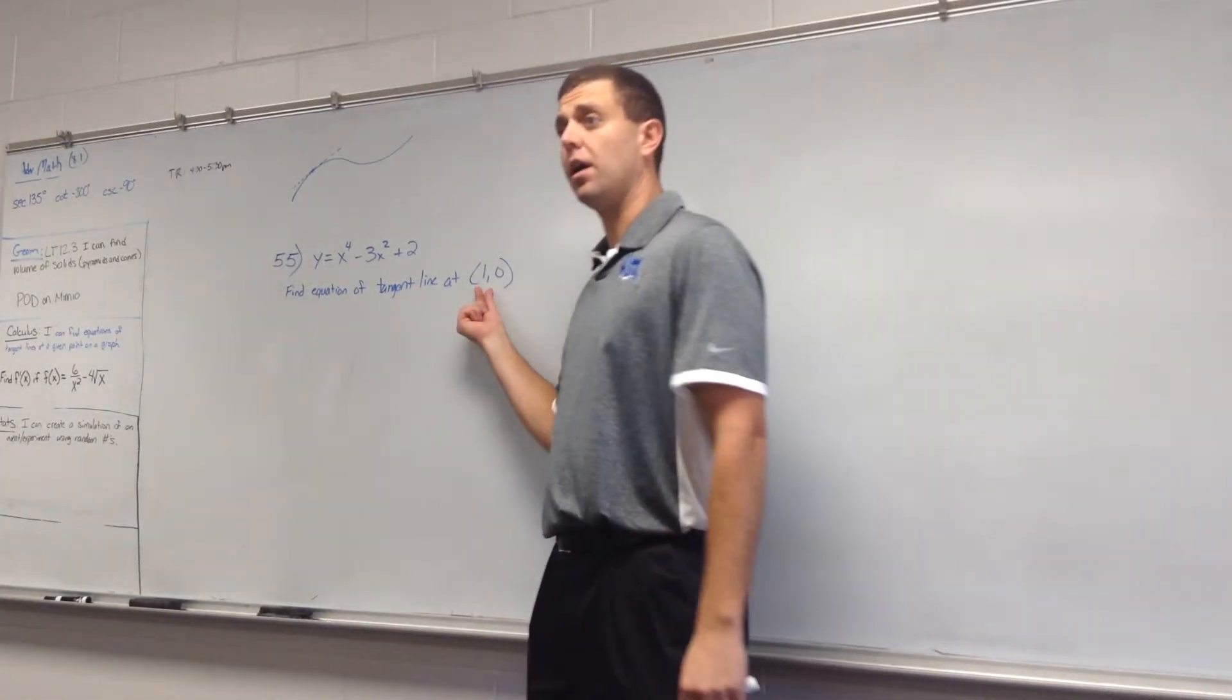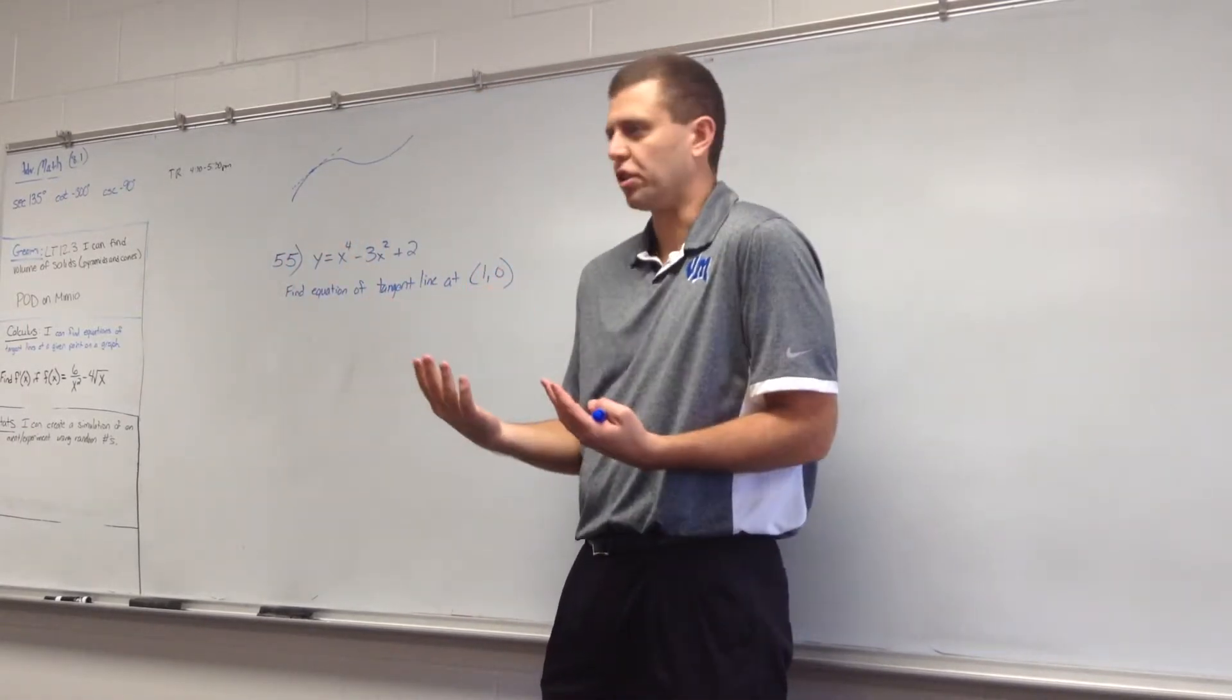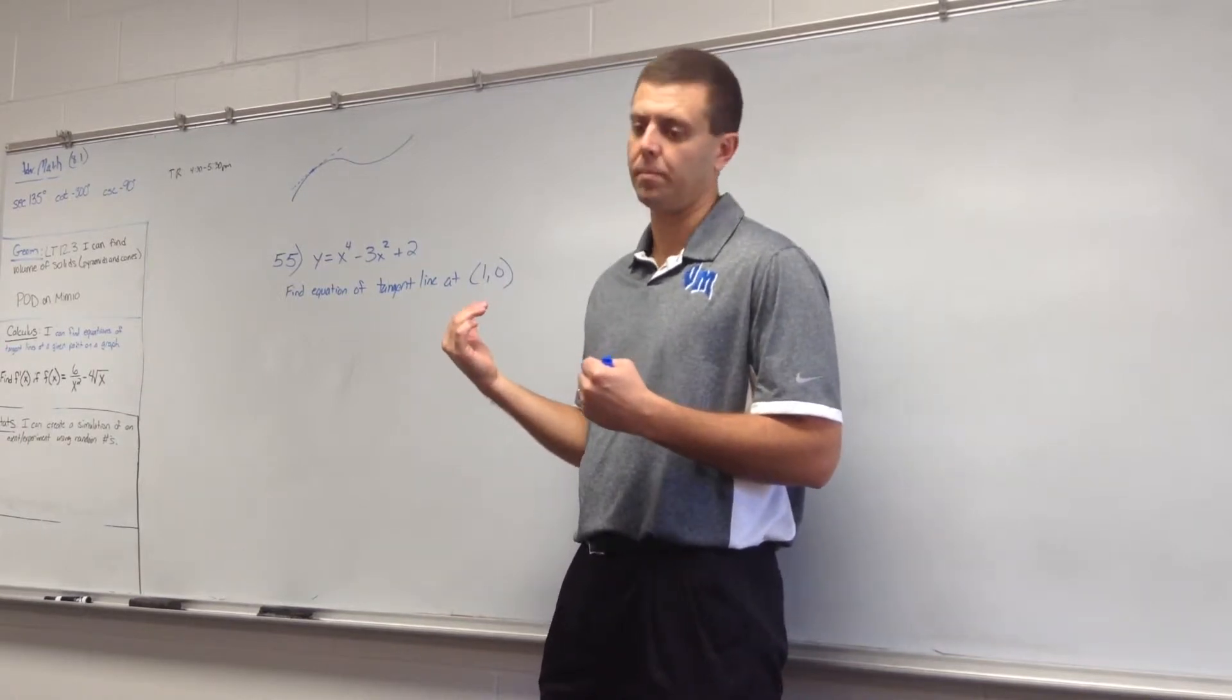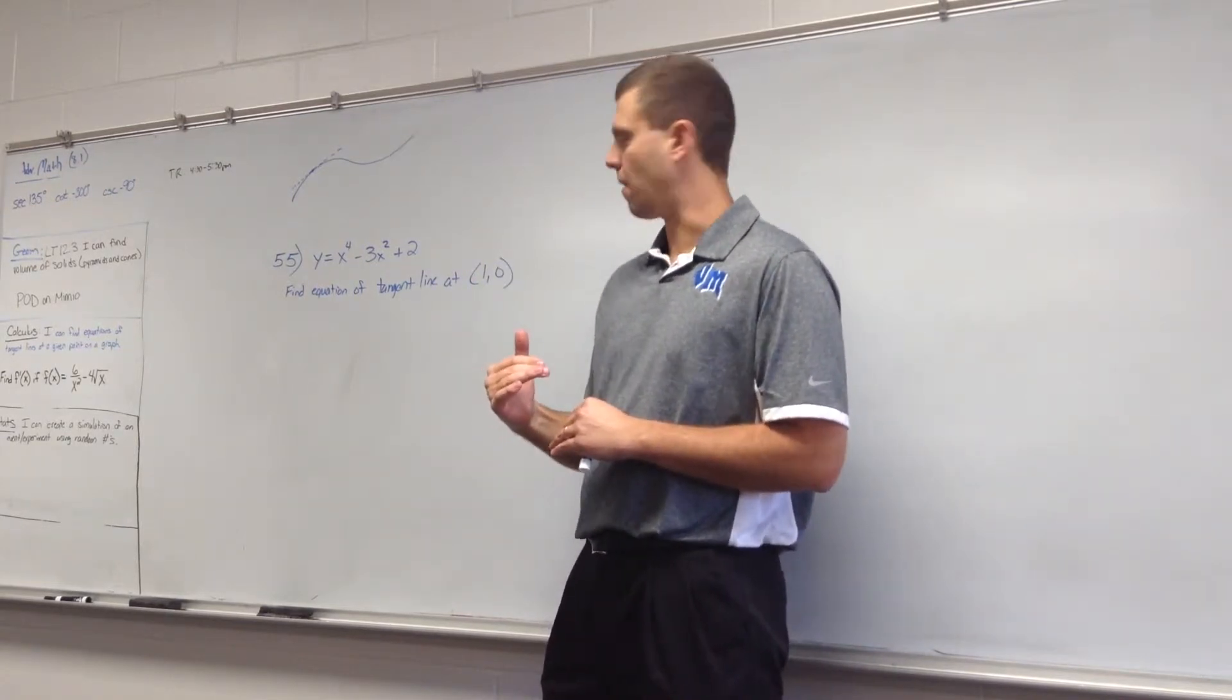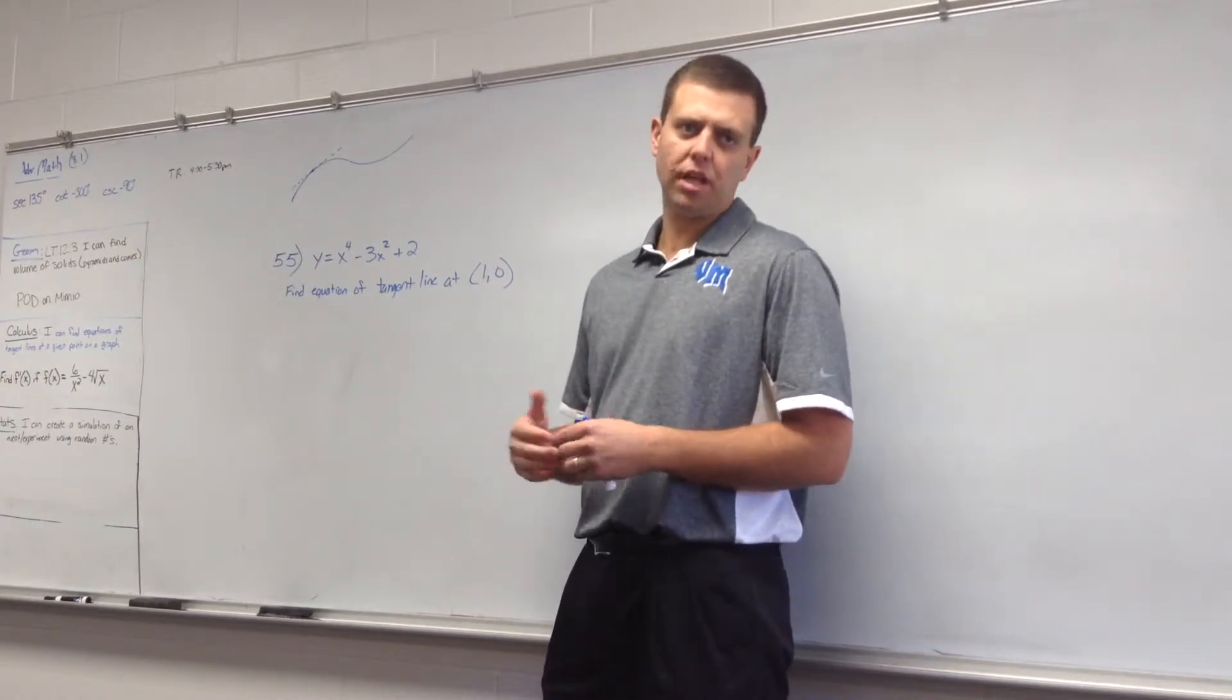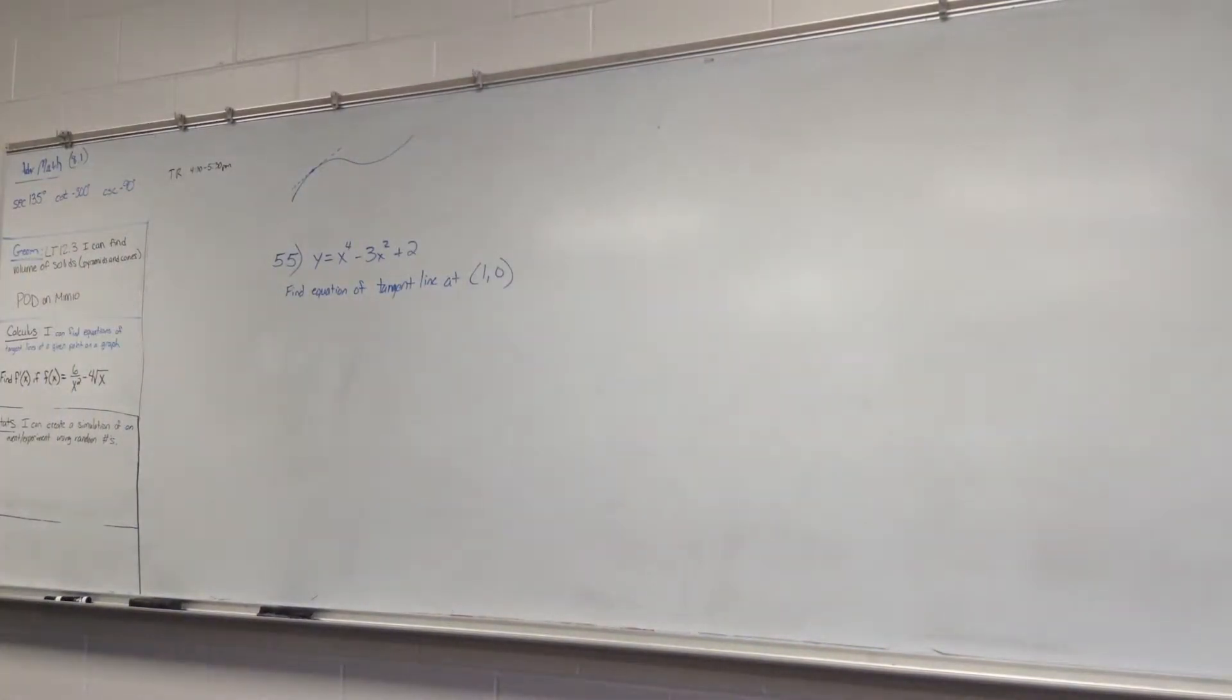So this is definitely a point that is located somewhere on that graph. We haven't looked at the graph yet, we're going to. So I'll have your graphing calculators handy here in a minute. But we're going to do all the calculus work here first. Before we can write the equation of the tangent line, we need to know the slope of the tangent line. And in order to find the slope of the tangent line, the first thing we should do is find the derivative.